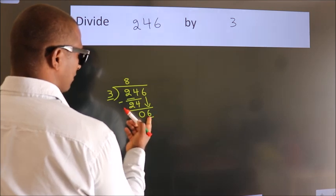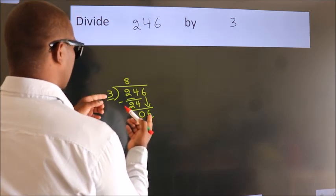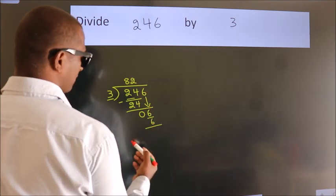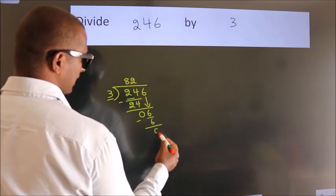So 6. When do we get 6 in the 3 table? 3 times 2 is 6. Now we subtract. We get 0.